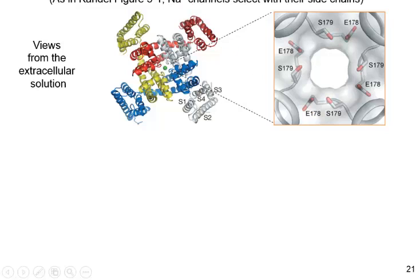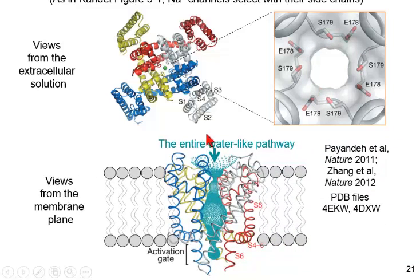Likewise, here is the atomic scale structure of a sodium channel. A sodium channel is not a tetramer. It has only one chain, but it looks as though it has four internal homology repeats. Inside the pore of a sodium channel, here are those carbonyl groups that trick the sodium ion into thinking it's still in water. Again, here is the water-like pathway from in the plane of the membrane in which the ions feel very comfortable.